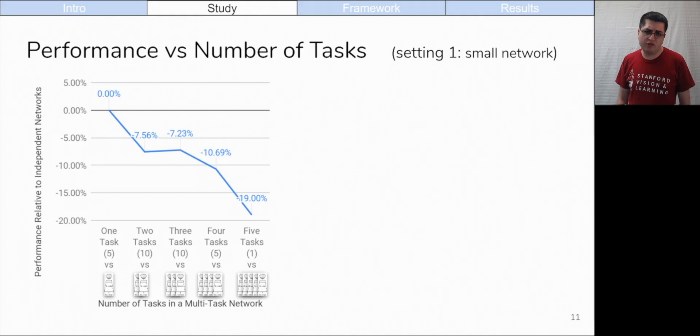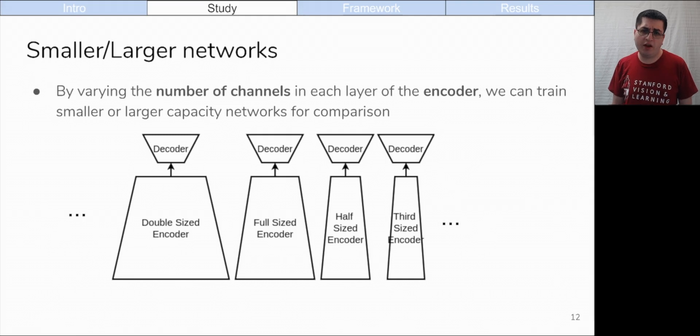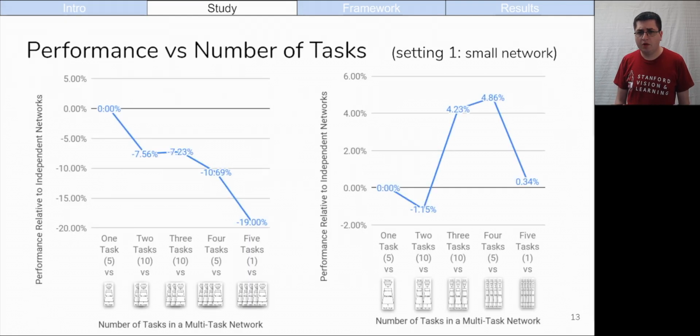This graph shows the average relative performance of these multi-task networks compared to independent training. Note that the top of the y-axis is 0. We see that independent networks tend to be superior, but this comparison is a bit unfair. A single multi-task network is being compared against several single task networks, which each take the same time to compute. Decoders are lightweight, so by varying the number of channels in each layer of the encoder, we can train a smaller or larger capacity network. When our independent networks use smaller encoders, such that total inference time is the same for independent networks and multi-task networks, multi-task learning can come out ahead on average. We have the best bang for the buck when we have an intermediate number of tasks in each network.